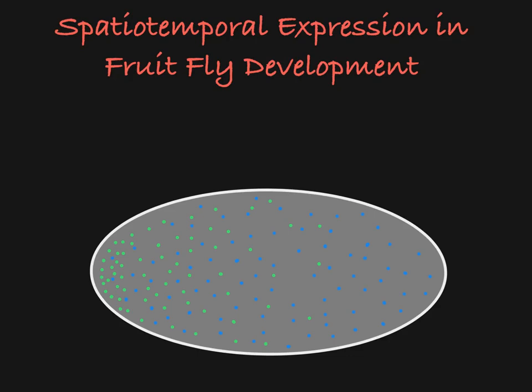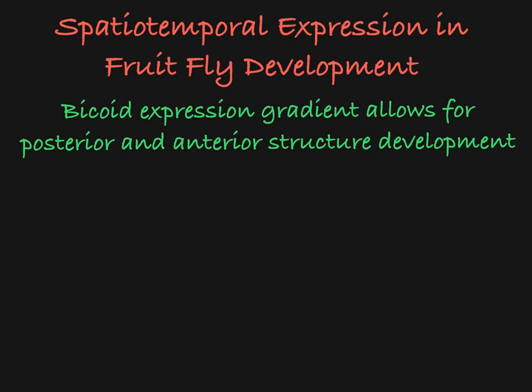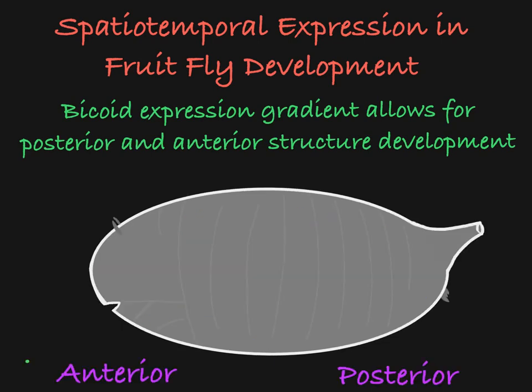This example shows the importance of spatiotemporal gene expression, because the expression of the Bicoid protein only in the anterior section of the embryo triggers appropriate development of both anterior and posterior features of the fly.